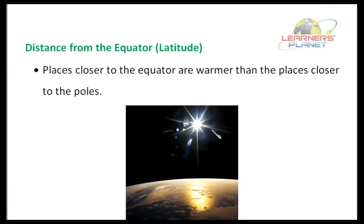Places which are closer to the equator are warmer than the places closer to the poles. For example, it is much warmer in India on an average, not taking into account some exceptions like the higher reaches of the Himalayas. So when it is much warmer in India, it will sometimes be cooler in Greenland. This is because the sun rays fall directly on the equator and at an angle on the poles.